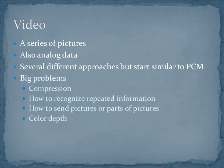The last thing we'll talk about today is video. Usually in video, we're sending a series of pictures, and when we're sending a series of pictures — particularly when we start talking about lots of resolution and lots of color depth — then we start to get into big bandwidth. Video is also analog data, and so we start with approaches similar to PCM, but then we have variations on a theme. With video streams, what we're trying to figure out is how we can compress the video, how to recognize repeated information and take advantage of those patterns, and then do we send all of the picture or just the moving parts? There is also how much color we want to provide.